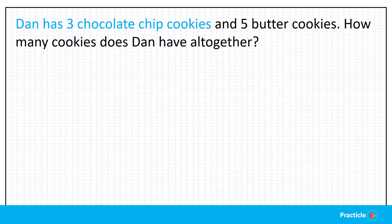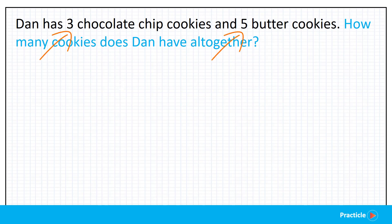Here's the math problem that we are going to solve today. Dan has 3 chocolate chip cookies and 5 butter cookies. How many cookies does Dan have all together? As you can see, we have kept the numbers really small in the problem so that we can focus on drawing the model.